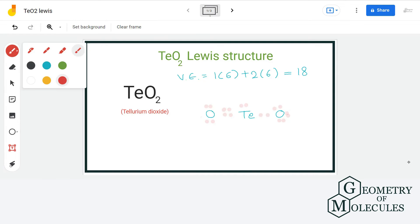So let us calculate the formal charge of each atom just to make sure this is the best possible Lewis structure. For tellurium atom, we have six valence electrons minus two non-bonding electrons minus six bonding electrons divided by two, that will give us a formal charge of plus one.